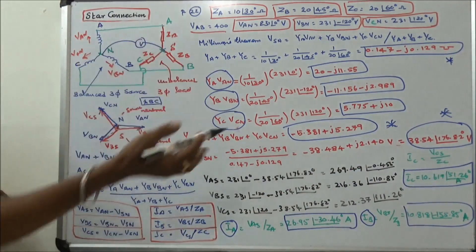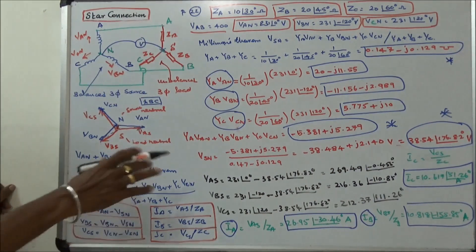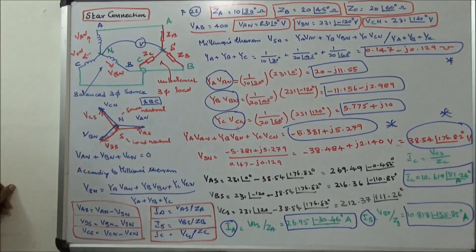In this way we calculate the line currents IA, IB, and IC. This is the application of Millman's theorem in an unbalanced star-connected load. Thanks for listening.